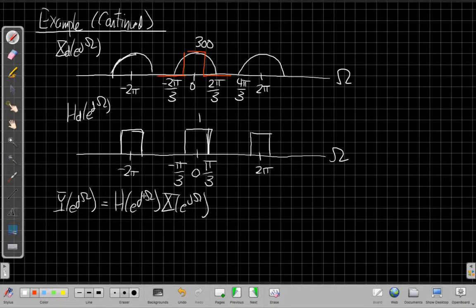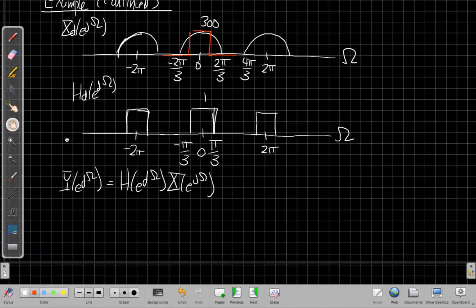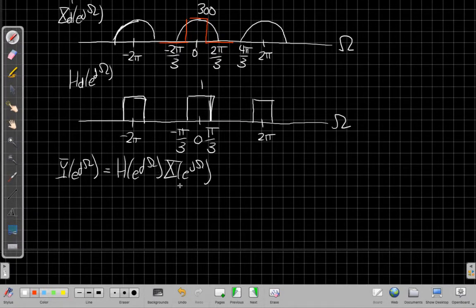Everywhere else, I'm multiplying it by 0. And so if I do that, I can sketch the result for my output. This would be Y sub d.